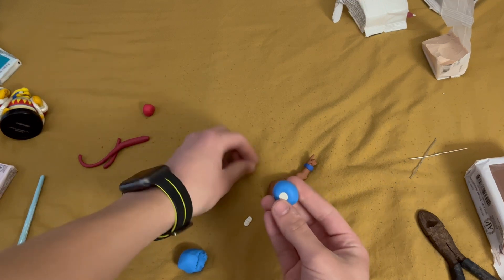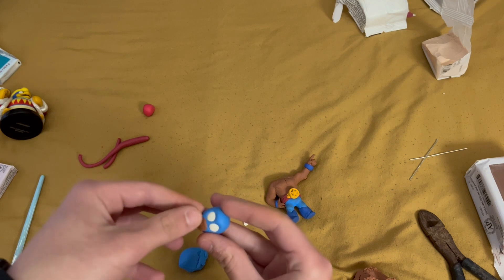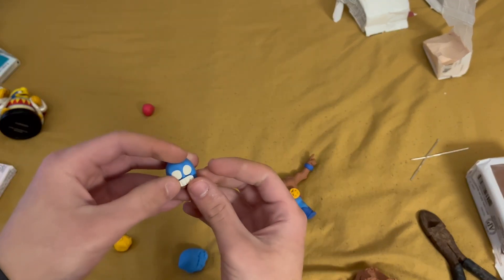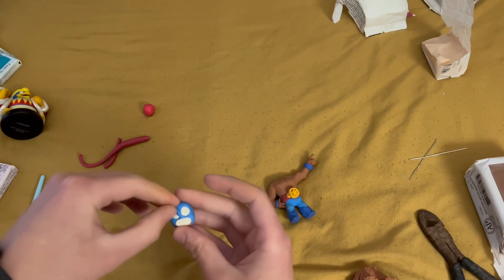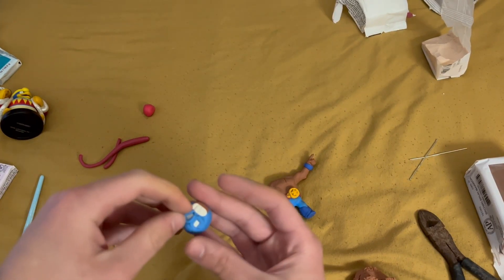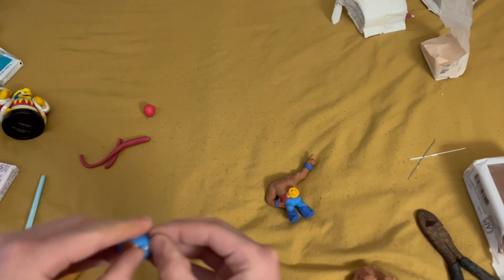I then push in both the two eyes into the head, and then I add a little bit of skin color to the mouth area. Once the skin color is on there, I push in the teeth as well, and then I add little worms of the blue clay around the eyes to make it look like the eyes are actually inside of the head.